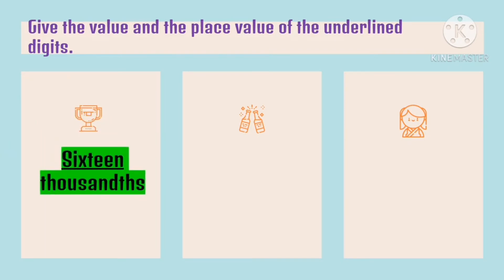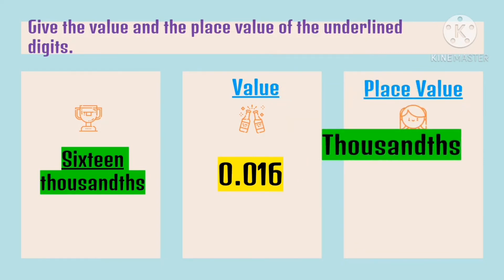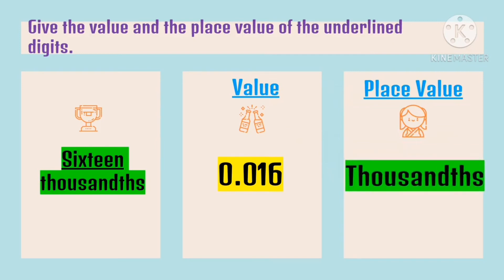Give the value and the place value of the underlined digits. We have sixteen thousandths. The underlined digit here is sixteen. If we're going to get the value of sixteen and the place value of sixteen, it should be sixteen thousandths. The place value holder for the tens place is zero. Then we have sixteen thousandths, and its place value is thousandths.